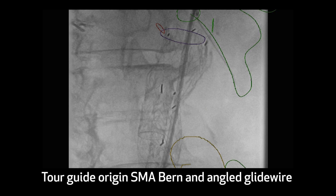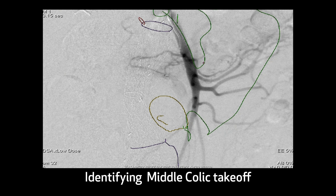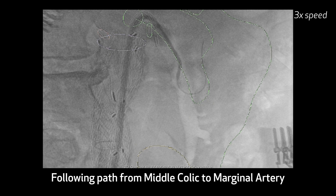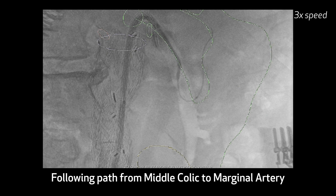We started off by putting a tour guide into the origin of the SMA and then used a Berenstein and an angled glide wire to engage in the SMA. It sometimes can be challenging to make that turn up into the middle colic artery. You can see we actually engaged it with the glide wire directly. Occasionally we use microcatheters that can be recurved into that. Once you get in there, the catheter tends to fly around the marginal artery of Drummond.